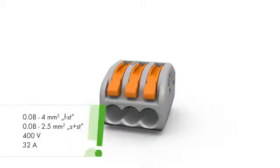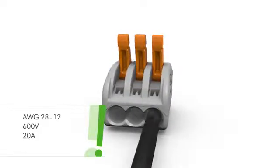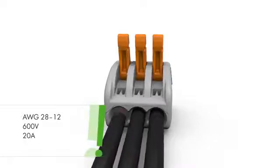The 222 series splicing connectors equipped with cage clamp compact terminate solid, stranded and fine stranded conductors without tools.